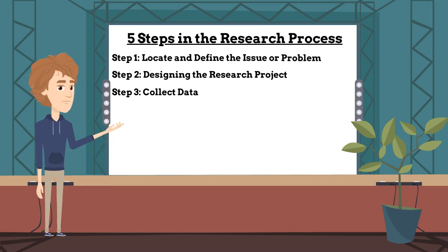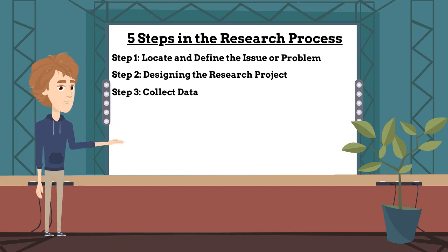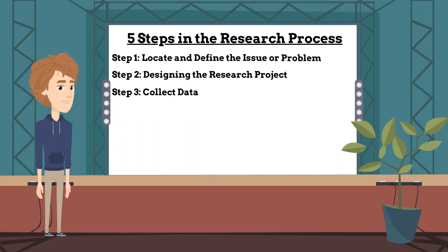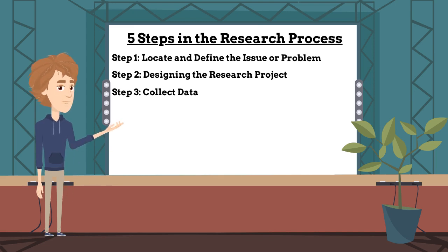Step 3 is to collect data. This step revolves around obtaining the information that you will need to solve the issue or problem identified. You can obtain the data in many ways, to include experiments, interviews, observations, focus groups, reports, previous research, and much more. Obtaining the best possible data is the key to any successful research project.